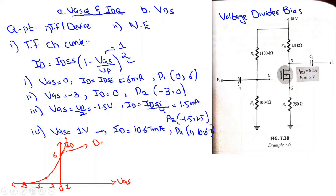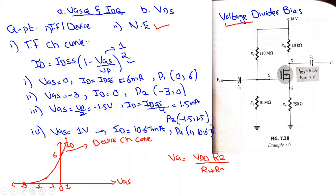This is the device characteristic or transfer characteristic curve. The next curve to plot is the network equation curve. Since this is a voltage divider bias configuration, VG is found using the voltage divider rule: VG = VDD × R2 / (R1 + R2). Substituting the values with VDD = 18V gives VG = 1.54V.